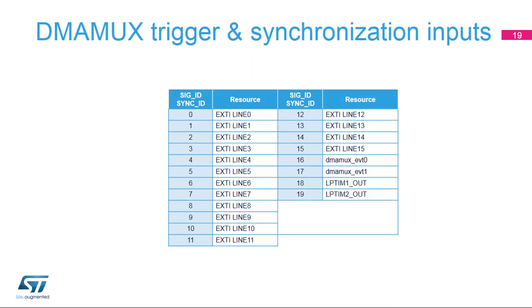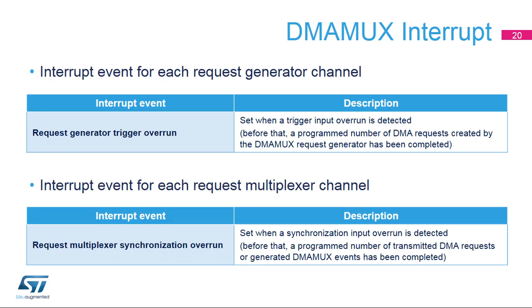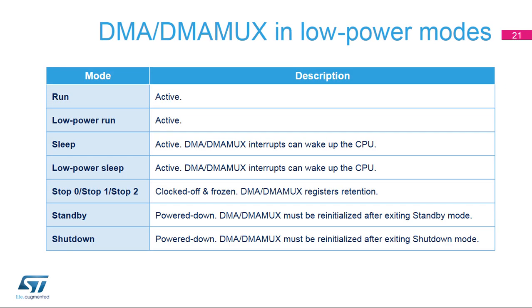This table shows the STM32WB mapping of the trigger inputs and the synchronization inputs for any channel. Assigning a trigger input is programmed by the SIG ID field of any DMA MUX request generator or DMA MUX RGX CR register. Assigning a synchronization input is programmed by the SIG ID field of any DMA MUX request multiplexer channel or DMA MUX CX CR register. Each DMA MUX request generator channel can notify software of a trigger overrun. Each DMA request multiplexer channel can notify software of a synchronization overrun. In sleep and low-power sleep modes, the DMA controller and the DMA MUX remain active and can be used, for example, to transfer UART or I2C received characters to memory and afterwards wake up the CPU.